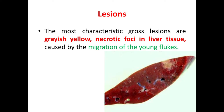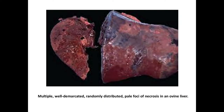Here you can see another picture of a sheep liver — an ovine liver infected with black disease. You can see multiple well-demarcated, randomly distributed pale foci of necrosis in the ovine liver here.